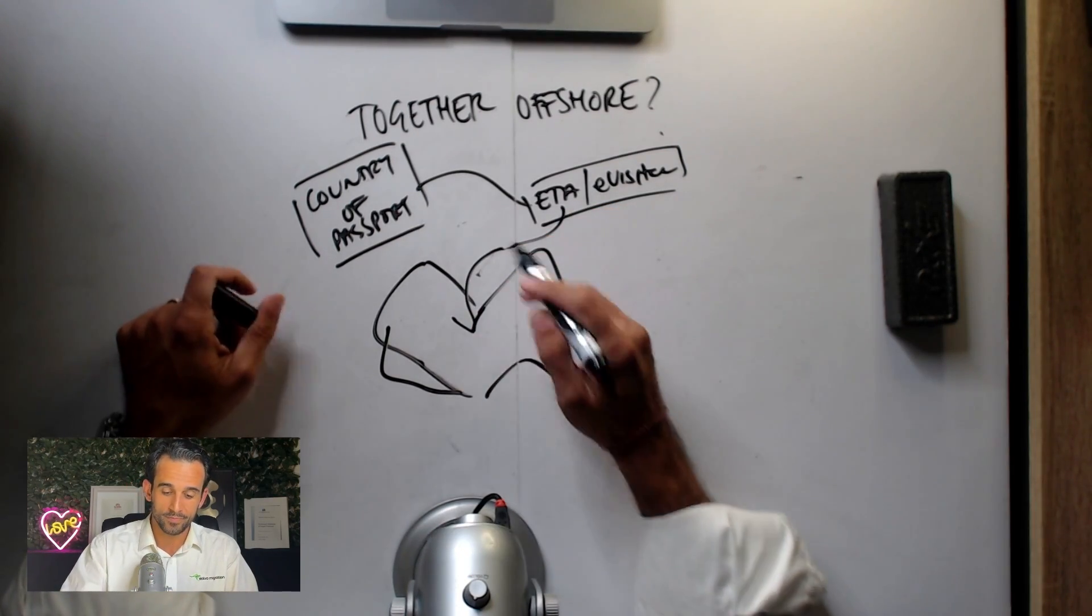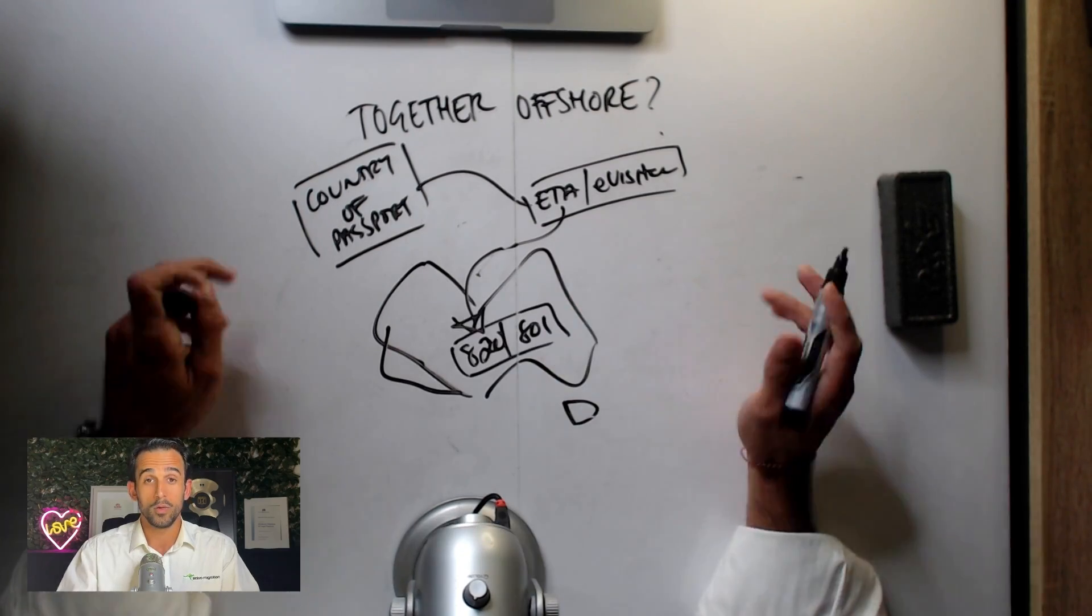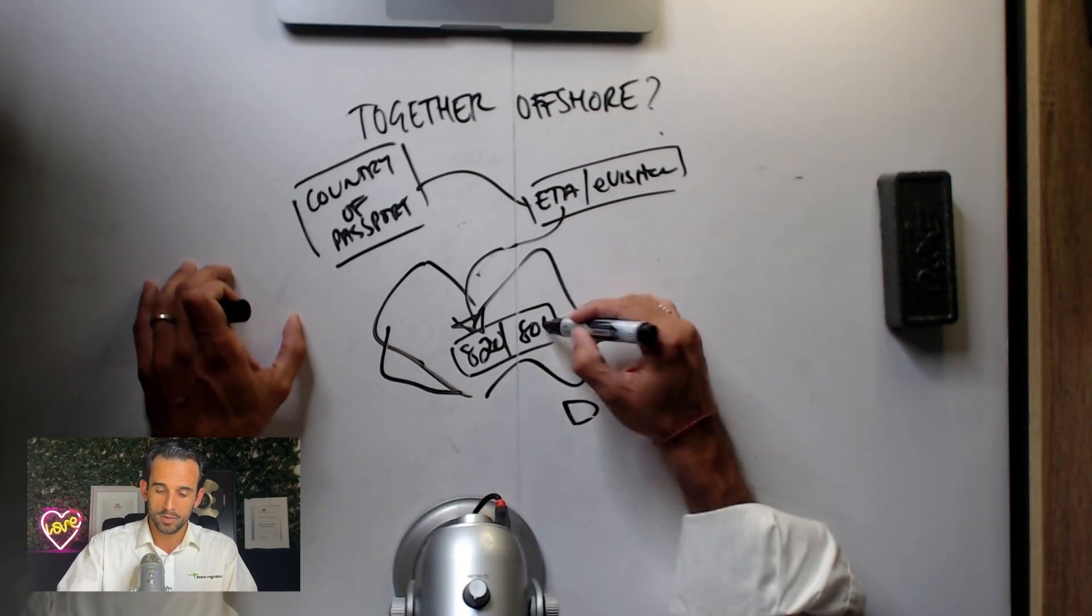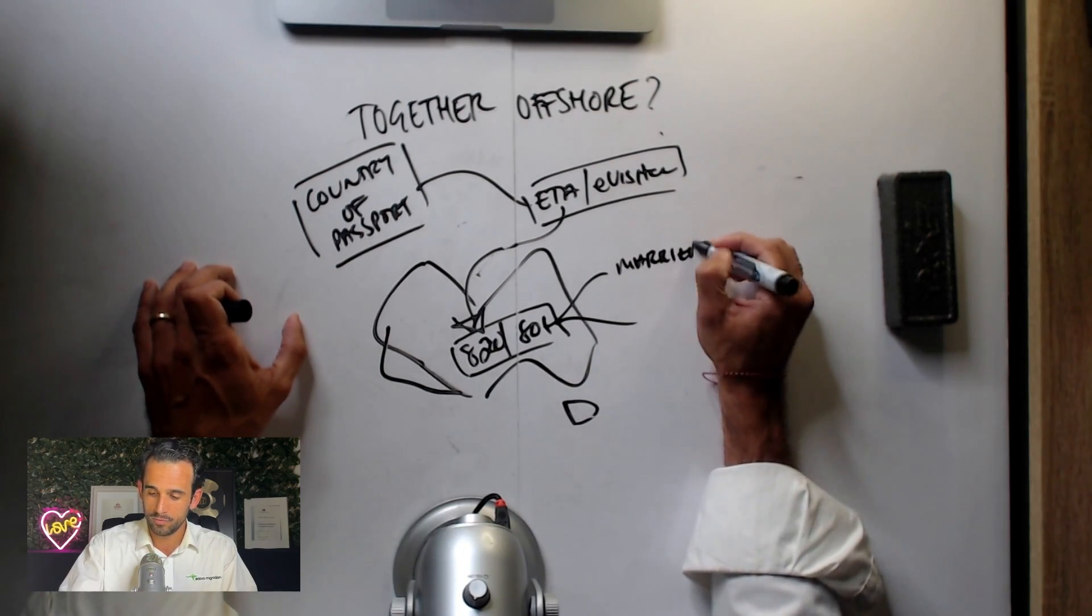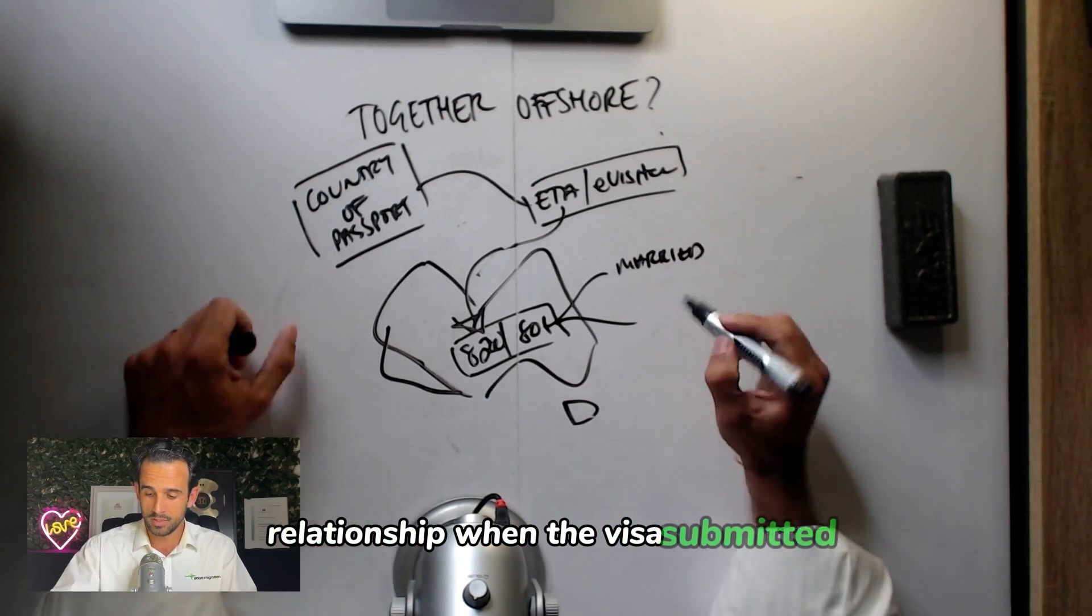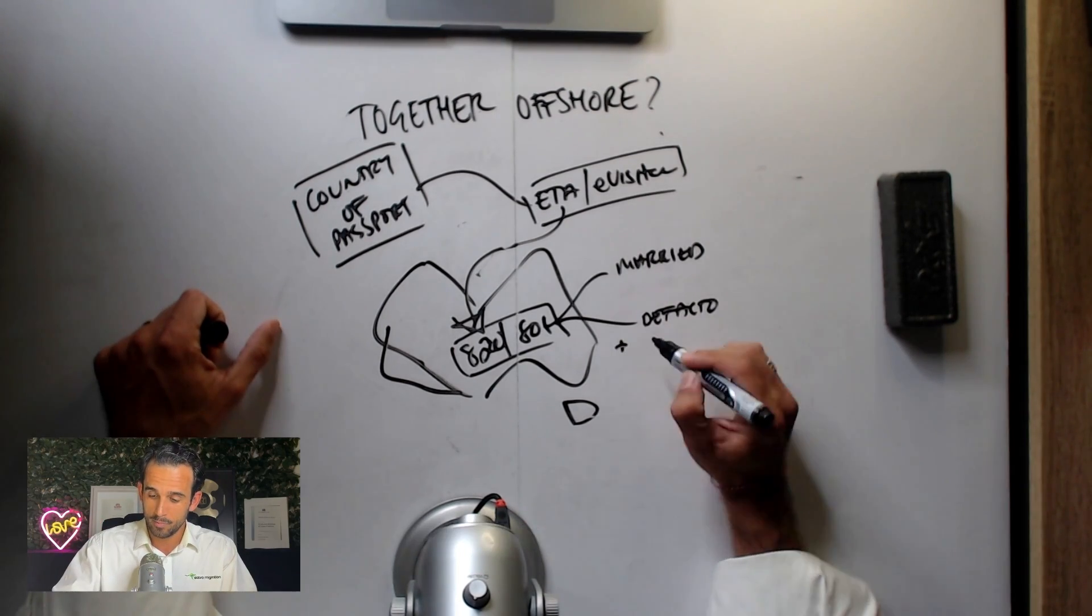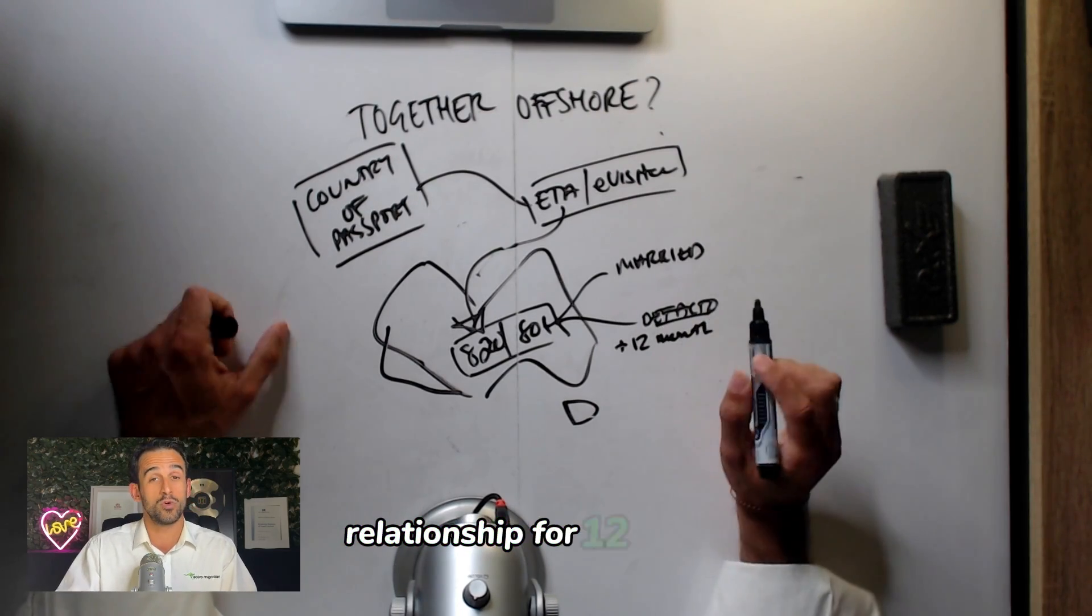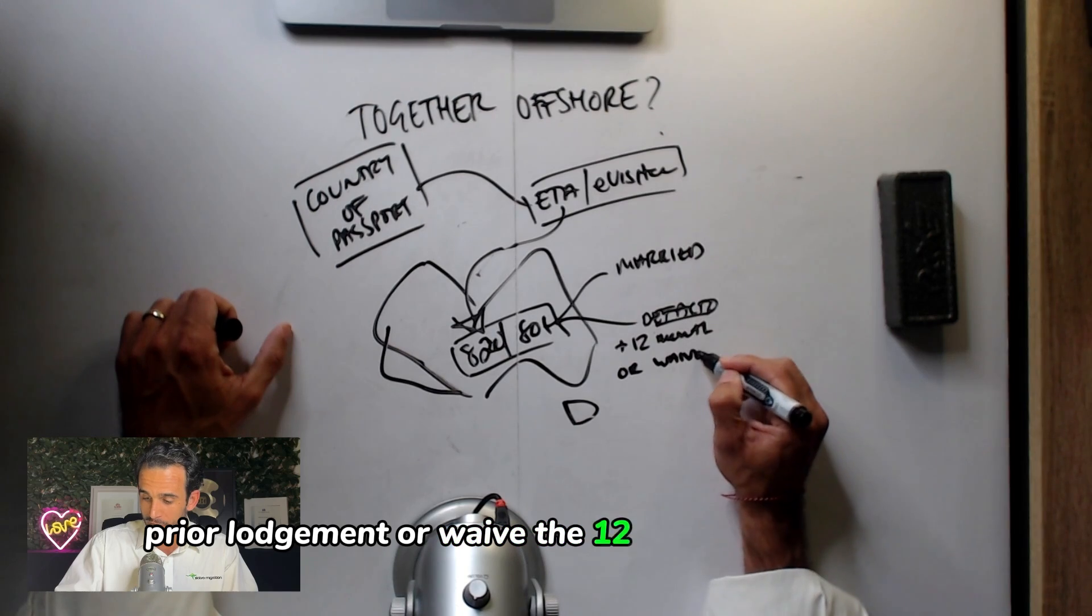Once you are in, you can then look to explore submitting the onshore partner visa, which is a combined application for two visas, the 820 and the 801. Both require that you are in a genuine married relationship when the visa is submitted, or a genuine de facto relationship when the visa is submitted, plus prove you've been in a de facto relationship for 12 months prior to lodgment, or waive the 12-month requirement.